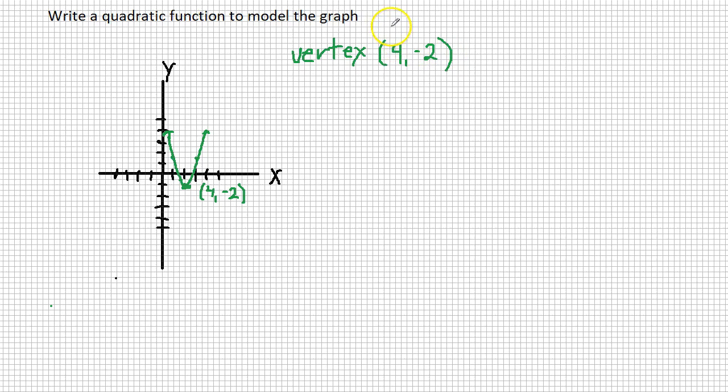So what does that tell me? That tells me that h equals 4 and k is negative 2. So I know vertex form is y equals a times x minus h, quantity squared, plus k. So I know h equals 4, k equals negative 2.